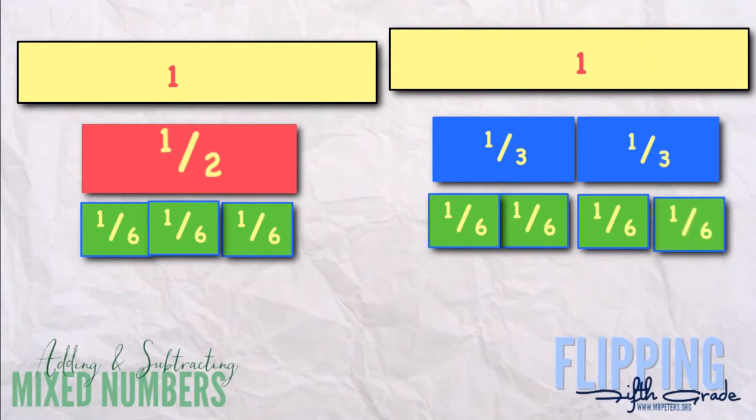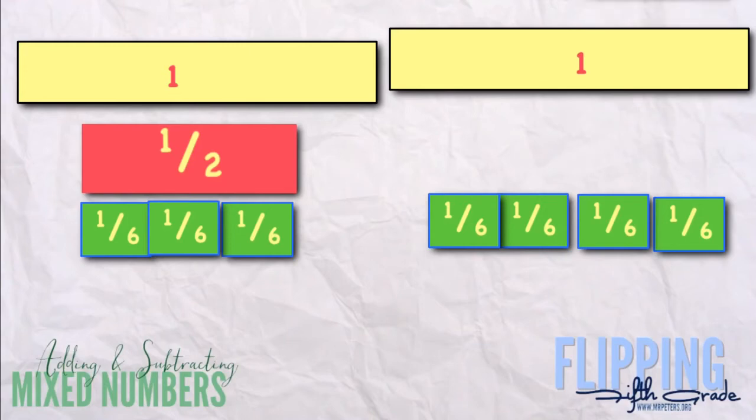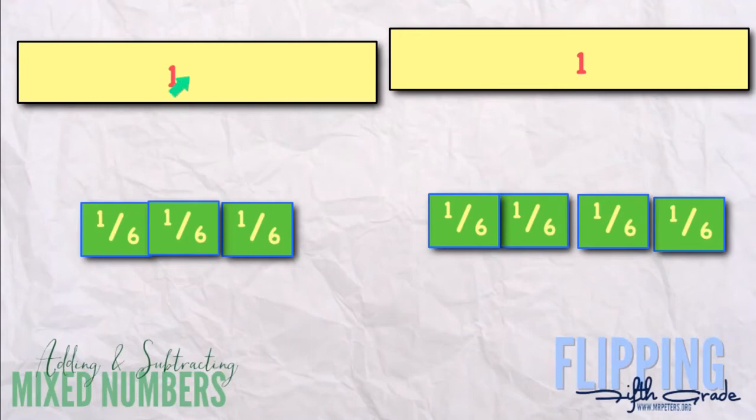Okay, so now I can take away my thirds. And I can take away the half. All right, so now I'm left with two wholes. And one, two, three, four, five, six, seven-sixths.